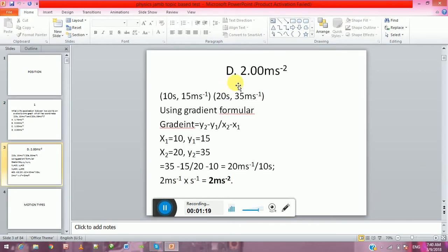So the answer is D, 2.00 meter per second square. How did we come about this D?